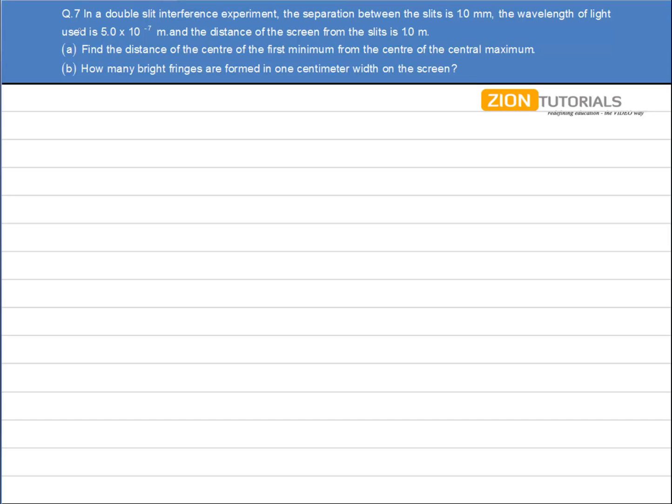In the YDSC experiment, the separation between the slits, small d, is given as 1 mm, and the wavelength of the light used is 5 × 10^-7 meters, and the distance of the screen from the slit, capital D, is 1 meter.